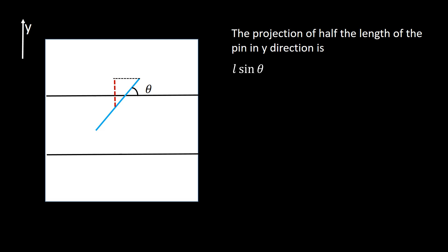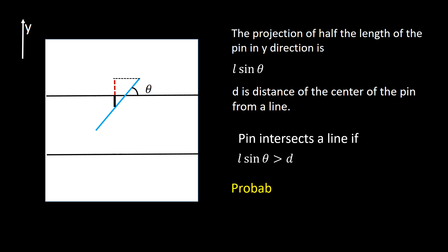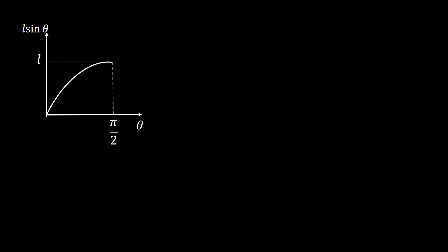Now L sin θ is very important for us, and the next important quantity is the distance of the center of the pin from the nearest line. In the diagram, the dark black line represents this distance — let us call it small d. So obviously, the pin is going to intersect a line if this distance d happens to be less than L sin θ. This L sin θ is nothing but the projection of half the length of the pin in the y direction.